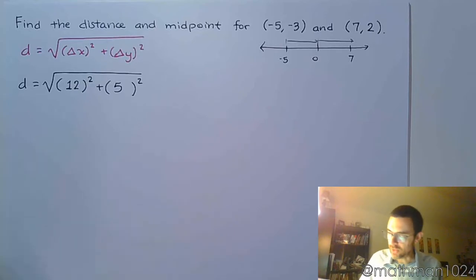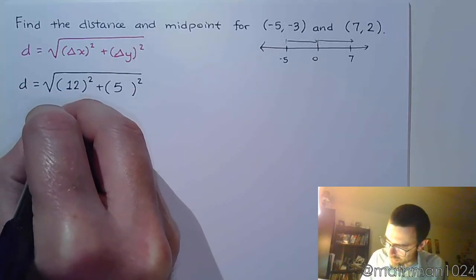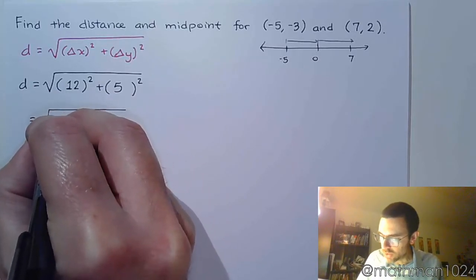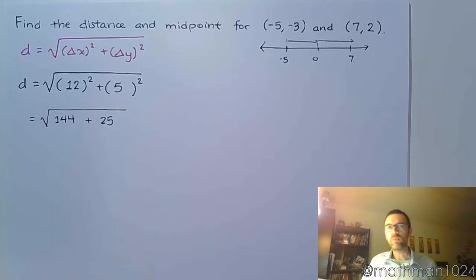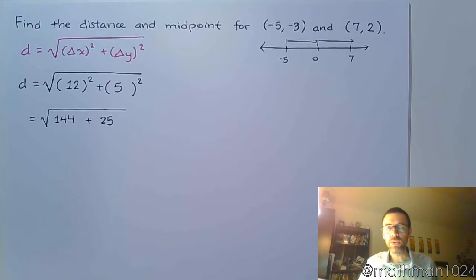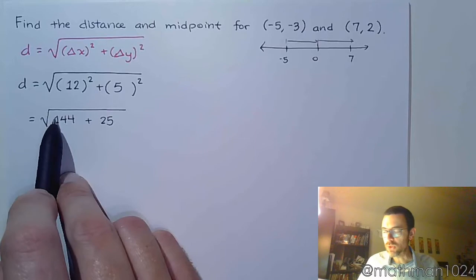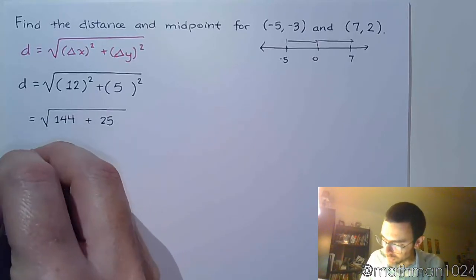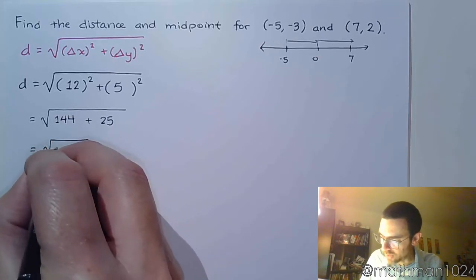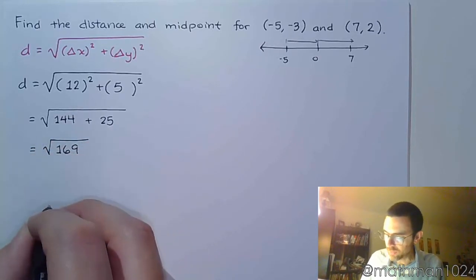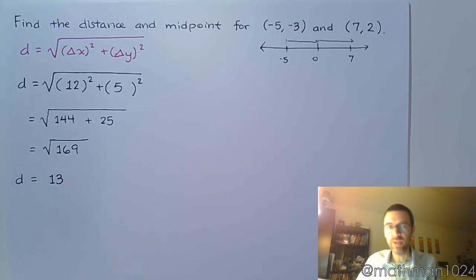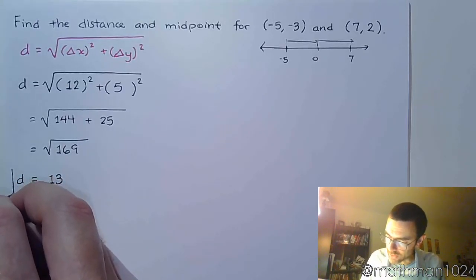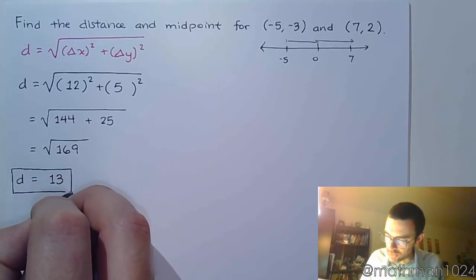Now let's do the arithmetic. 12 squared is 144, and 5 squared is 25. Remember, we're squaring the differences, so the signs don't really matter — whether it's positive or negative, once you square those values they're both going to be positive. So 144 plus 25 is 169, and the square root of 169 is 13. The distance between these two points is 13 units.